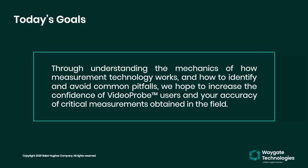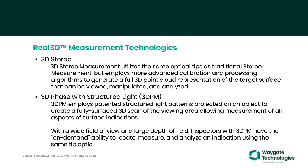The two measurement technologies we'll focus on are 3D stereo, which uses the same optical tips as traditional stereo but employs more advanced calibration and processing algorithms to generate a fully-surface point cloud representing the target more accurately—letting you view, manipulate, and analyze it rather than only getting data where cursors are placed. Then 3D phase measuring with structured light (3DPM) employs patented structured light patterns projected onto an object to create a fully-surface 3D scan of the viewing area, allowing you to measure all aspects of the surface by pivoting the point cloud.